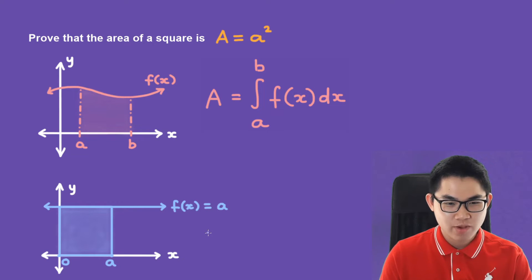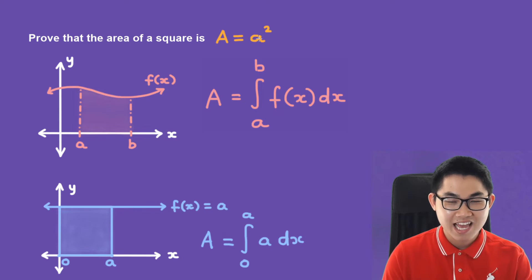If we use this formula then we have the area of the square is equal to the integral from 0 to a of f of x, and f of x is also equal to a. Just note that a is a constant, so it's just a number, and then we have dx. Now if we solve this integral and it gives us a square, then we basically prove that the area of a square is a to the power of 2. So let's go ahead and solve this integral.